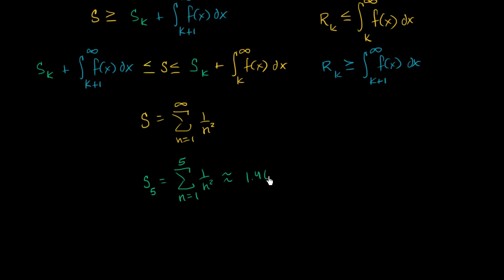So approximately 1.464. Our k in this case is five — I just picked that arbitrarily. We would get a better estimate with a higher k, like the first ten or twenty terms, and a worse estimate with k equals three. But k equals five seems reasonable and is something we could compute by hand, though it would take more time. Let's evaluate these integrals.